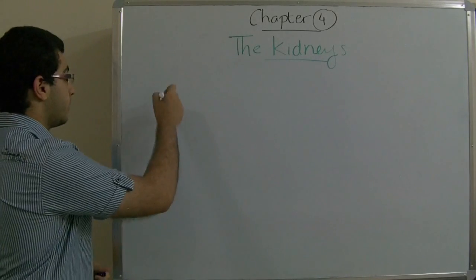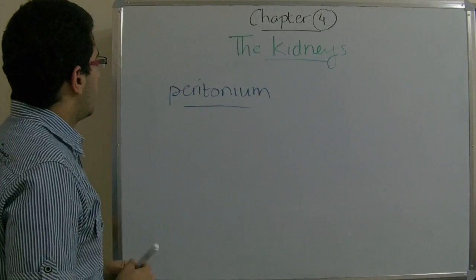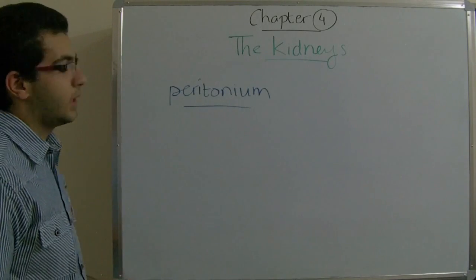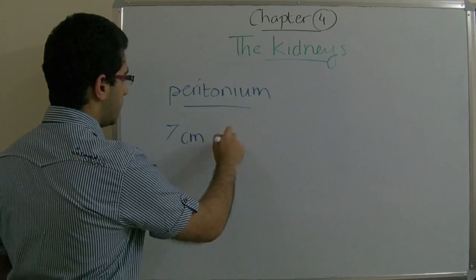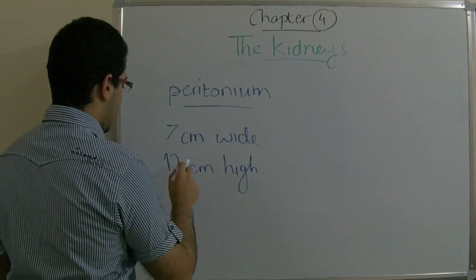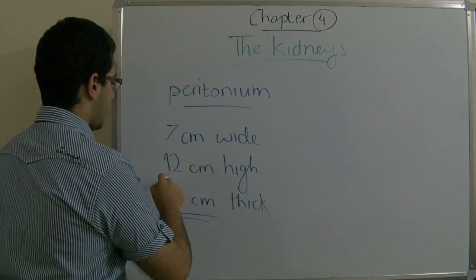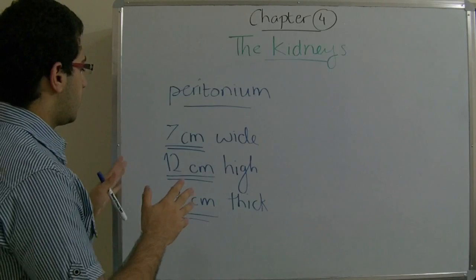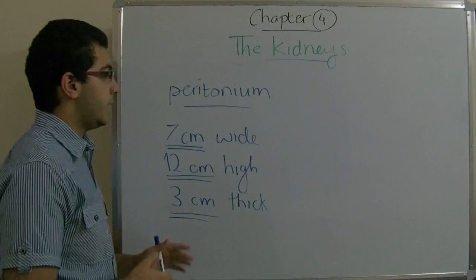The kidneys are found behind the peritoneum, which is a membrane that covers the abdominal cavity. Both kidneys are found on each side of the vertebral column. The kidneys in humans are 7 cm wide, 12 cm high, and 3 cm thick — these are the approximate dimensions of the kidney inside the human body.